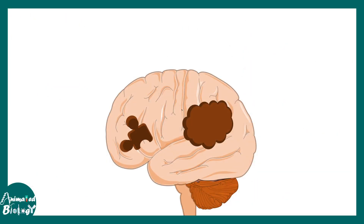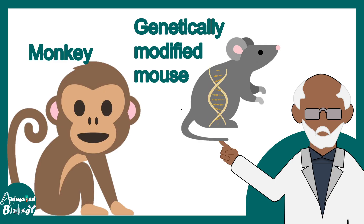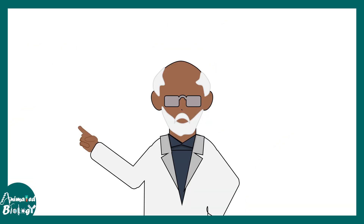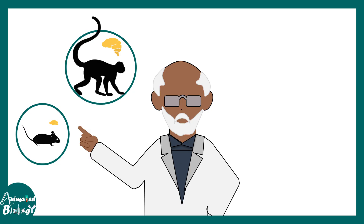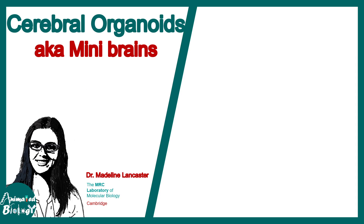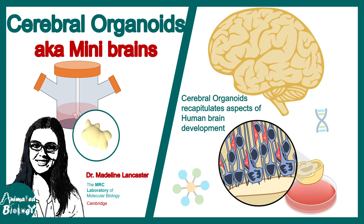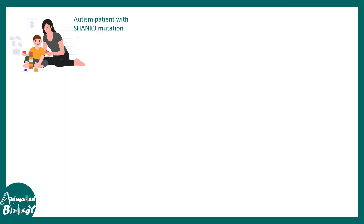Since autism is a neurodevelopmental disorder, all these abnormalities occur during the time when the brain was being built. Studying the development of a human brain is not easy — scientists use genetically modified mice and monkeys, as these models partially recapitulate human brain development. Human brain development occurs inside the mother's womb, making it literally impossible to study directly due to ethical and technical constraints. In recent years, scientists at Cambridge developed a technique known as cerebral organoids, which recapitulate the cellular and molecular basis of human brain development, offering new insights into autism progression.